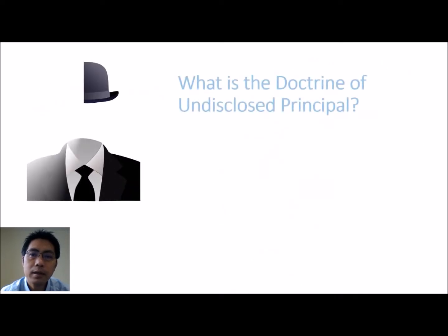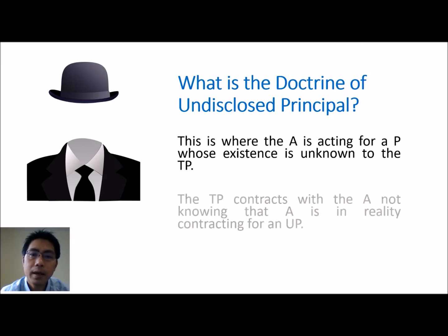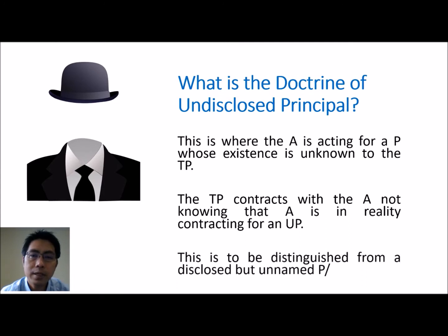The definition: the doctrine arises where the agent is acting for a principal whose existence is unknown to a third party, and the third party contracts with the agent not knowing that they are in reality contracting with the undisclosed principal. This must be distinguished from the doctrine of disclosed principal where the principal is unnamed — in that case, the third party knows the agent is an agent, just not whom the agent is acting for, but they do know there is a principal.